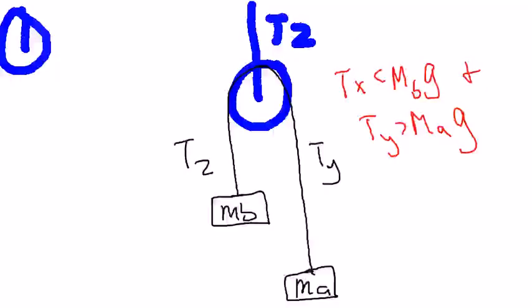Question 1 asks what is true about the tensions Tx and Ty. The problem tells us that MB is greater than MA. Tx is less than MBG because acceleration is moving towards the left. Therefore, Ty would be greater than MAG.